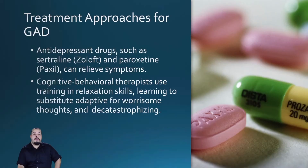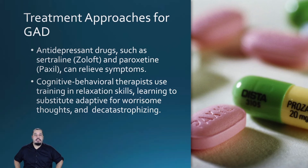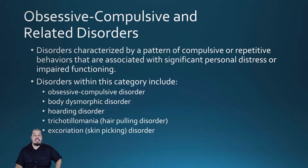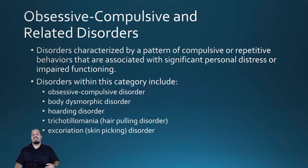Treatment for GAD follows similar approaches to panic disorder — antidepressants and CBT — with therapists focusing on awareness of symptom onset and training clients in coping and relaxation skills. Sometimes a thought that keeps running through one's head, like a song stuck on loop, can become the basis for obsessive-compulsive disorder (OCD) if that thought causes significant anxiety. OCD is a disorder in which intrusive thoughts that recur again and again are followed by repetitive ritualistic behaviors or mental acts.